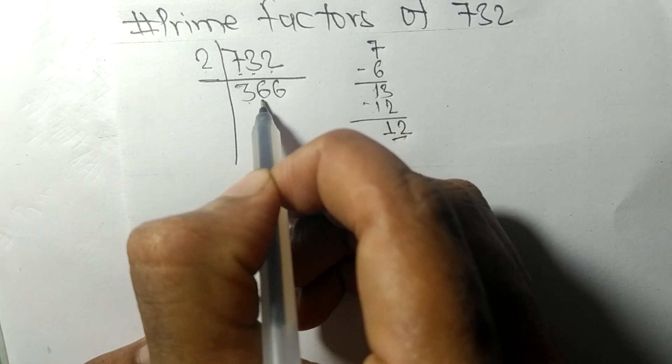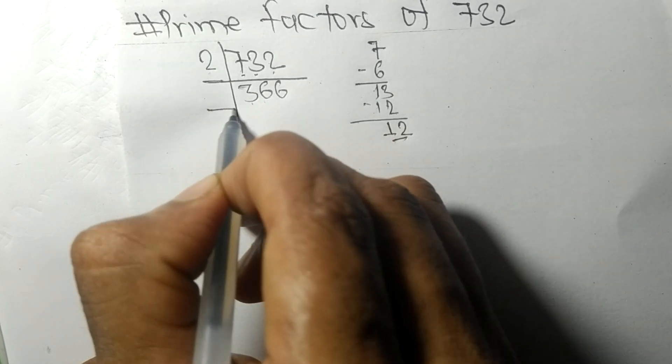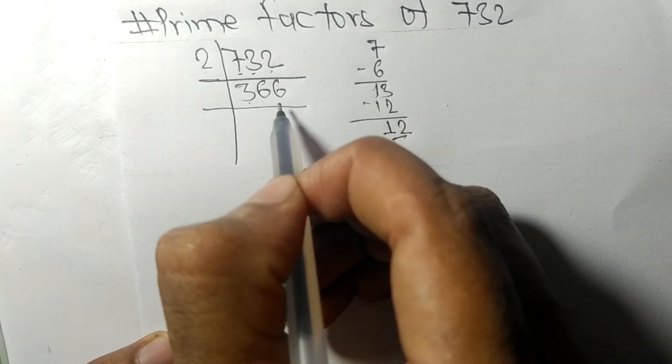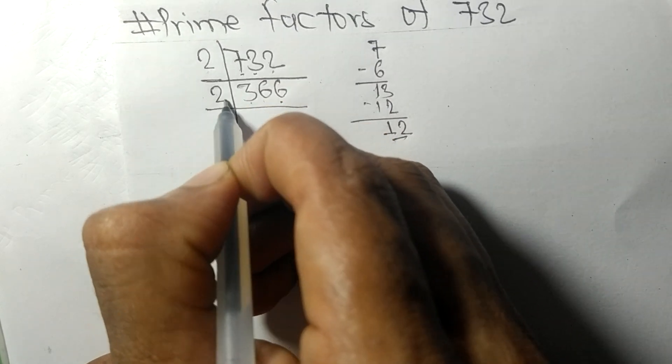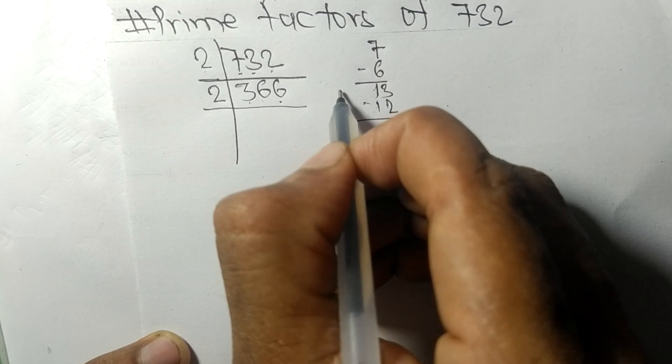So again it has an even number 6 at last, so it is divisible by 2. First we have 3.